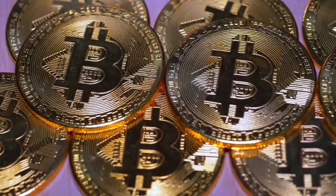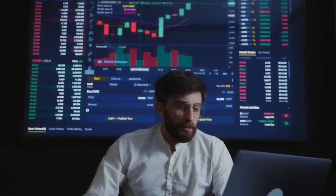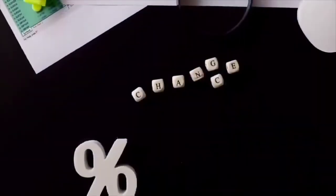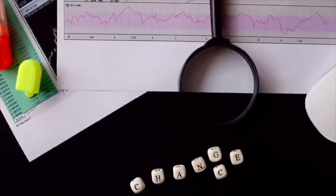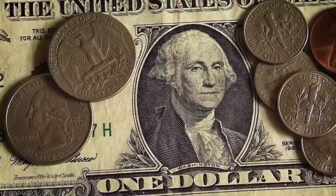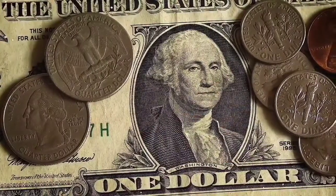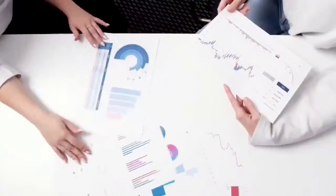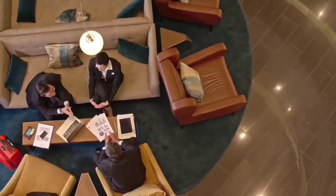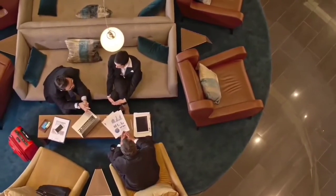Elsewhere, Wallet Investor has made a more conservative internet computer price forecast. It has ICP token continuing to grow but not breaking the $1,000 mark before the latter half of 2023. By 2025, the platform expects the internet computer coin to reach an average trading price of $1,328.45, which will grow to $1,655 before the year is out.